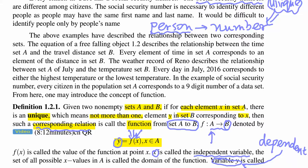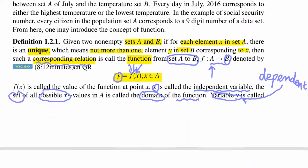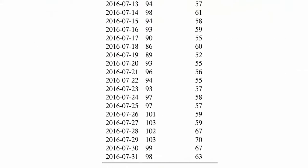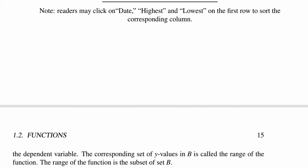And then here, all the possible values, all the possible X will form a range. And then we say all the possible values, the set of all possible values will be called the domain of the function. The corresponding set for Y will be called range. That's in the following, right here.